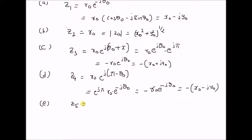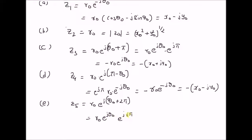z5 is equal to r naught into e power j theta naught plus 2 pi. That is a phase shift of 2 pi, which is basically equal to r naught into e power j theta naught into e power j 2 pi. And e power j 2 pi is equal to 1. So this is equal to r naught into e power j theta naught. Therefore, a phase shift of 2 pi means the angle when shifted by 2 pi becomes the same complex number z naught.